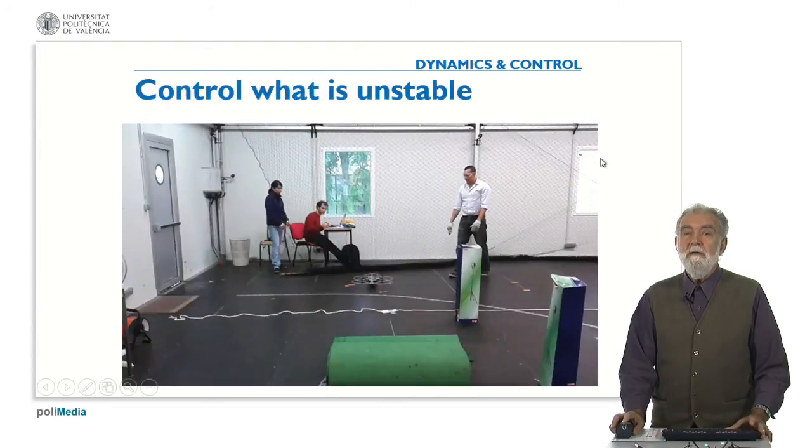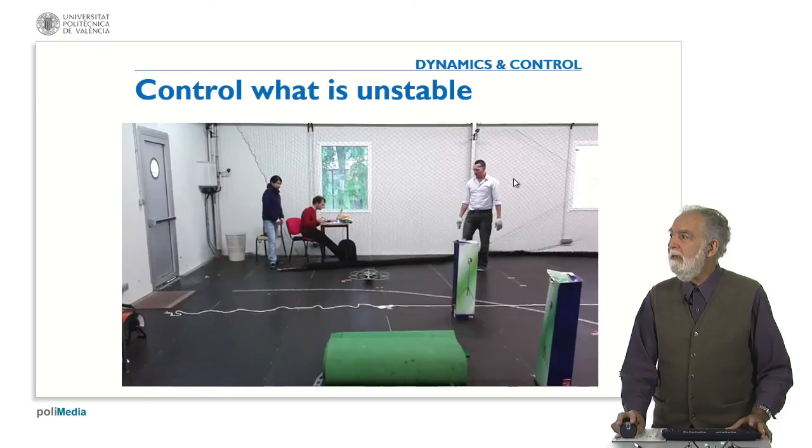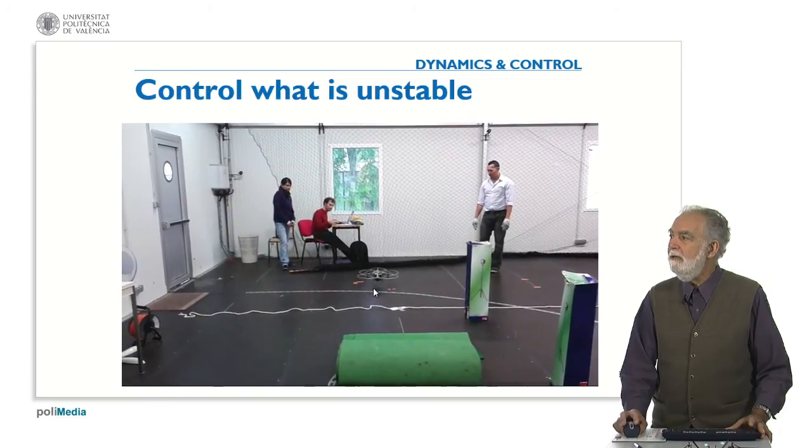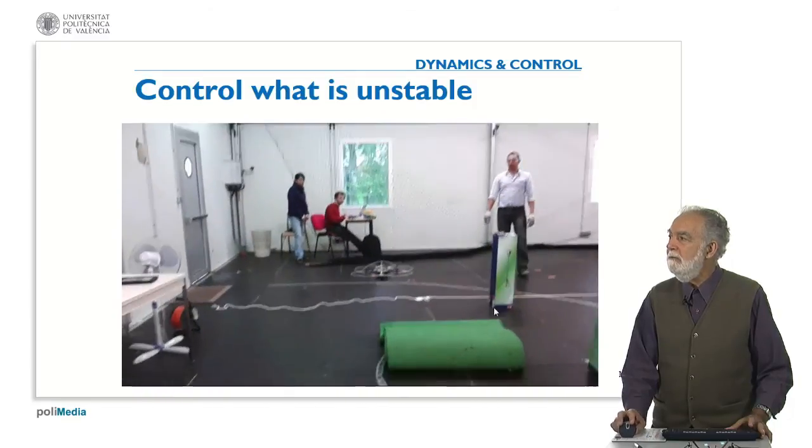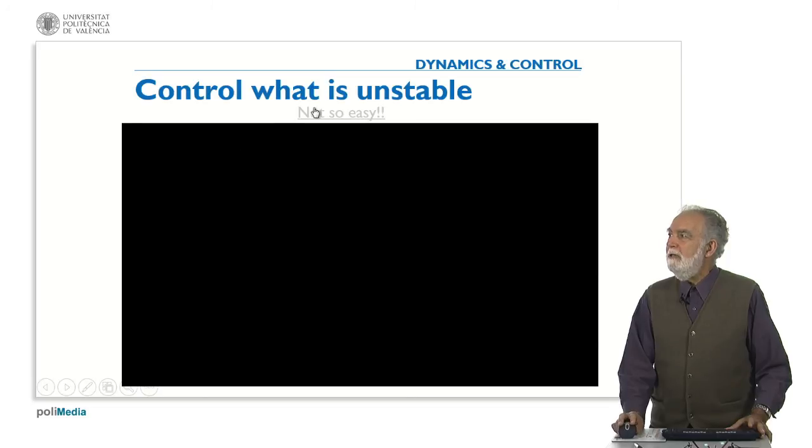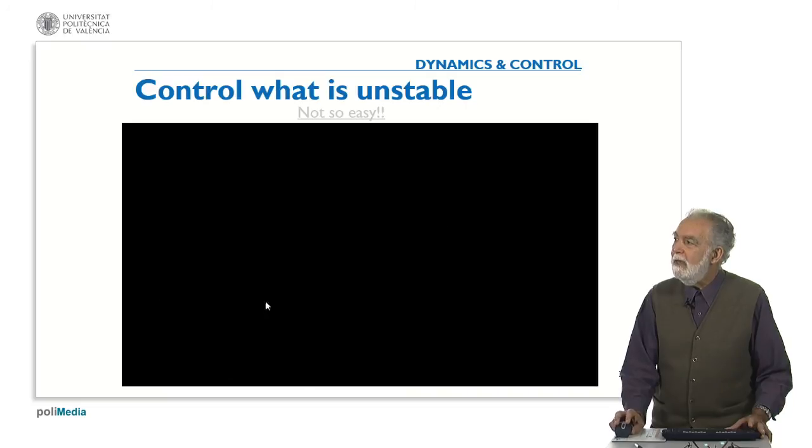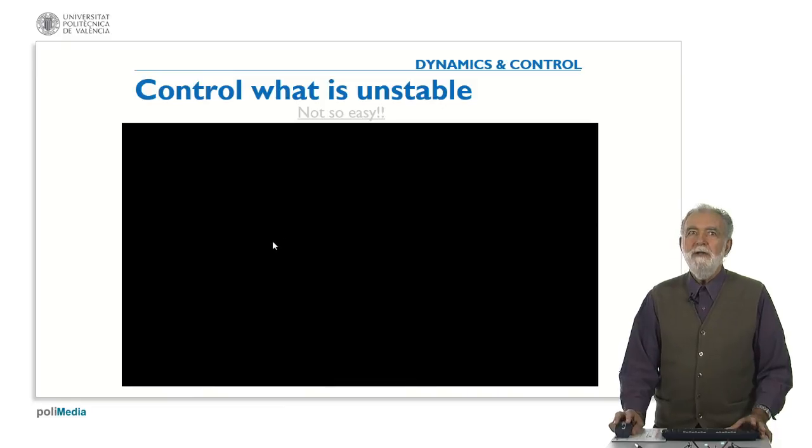It could appear that control is very simple but it is not the case. Look at this quadrotor. We are controlling the position and the speed. We are trying to move through these columns. But if something is wrong then we get a catastrophe. So it is not so easy to control a system. And it is said, and I use this black image here to emphasize, that control in general is a hidden technology. You don't see the control except if the control fails. If the control works properly, everything is perfect.